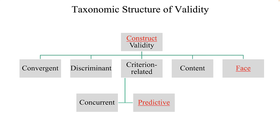Next we turn to criterion-related or empirical validity. We ask: What is the degree of association between the predictor and the criterion? There are two subtypes — predictive and concurrent. For predictive validity we ask: To what degree do measures on this test predict job performance later? Concurrent validity answers: To what degree do measures on this test given today measure job performance as measured today? Lastly, content validity asks: To what degree are these test items indicative of the thing being measured?